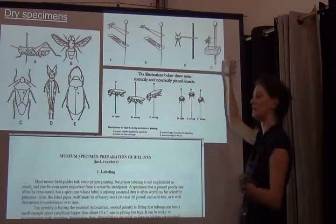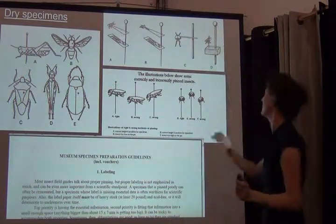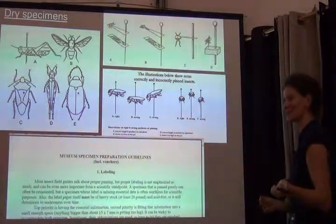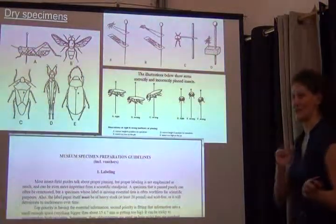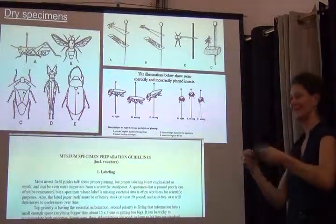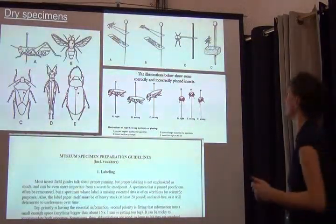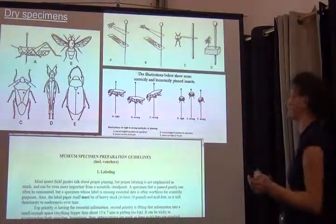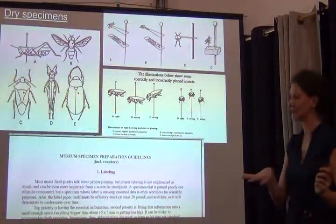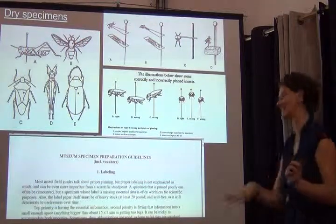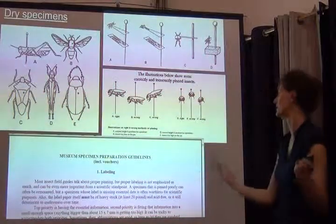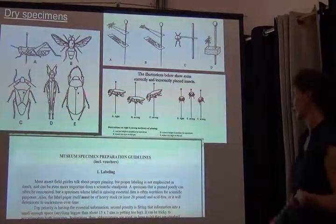Older specimens are sometimes mounted on minuten pins — super tiny fine pins. I avoid those because they're difficult to handle; they cling to glasses and can cause injury. A friend of mine flipped one while preparing tiny flies and got it in his eyeball — not a pleasant experience. Point mounting is more pragmatic and cheaper.